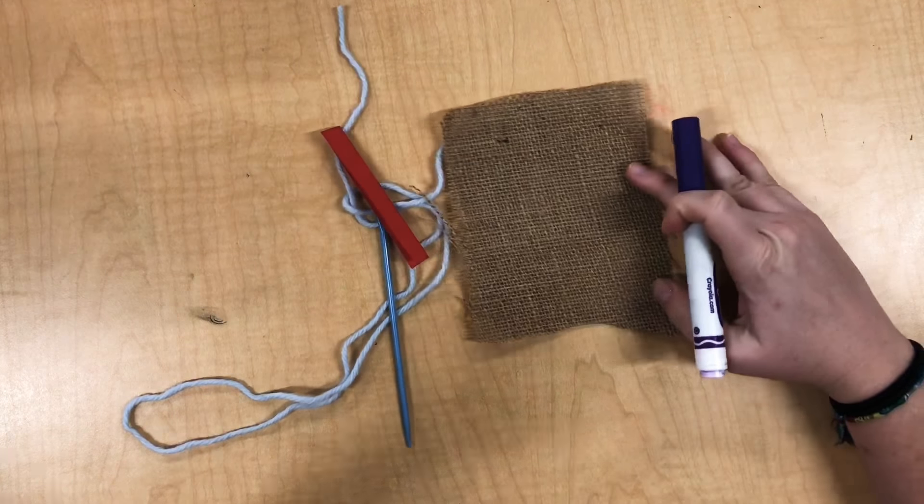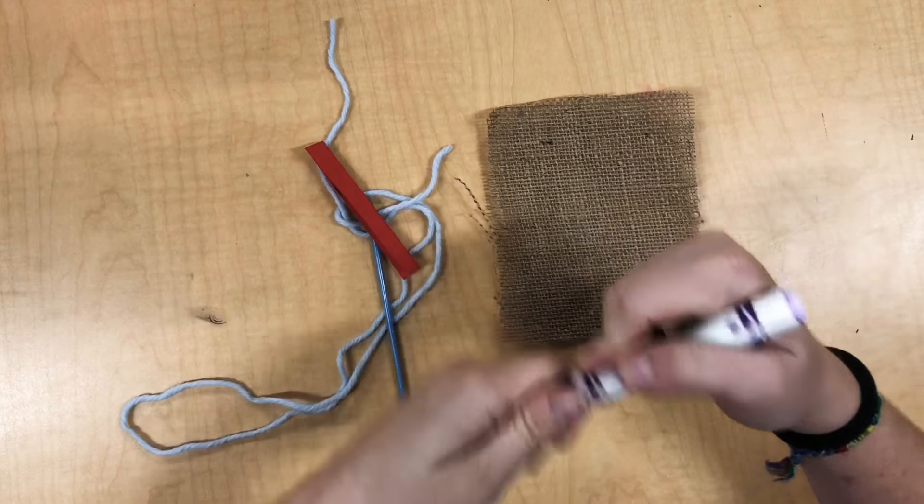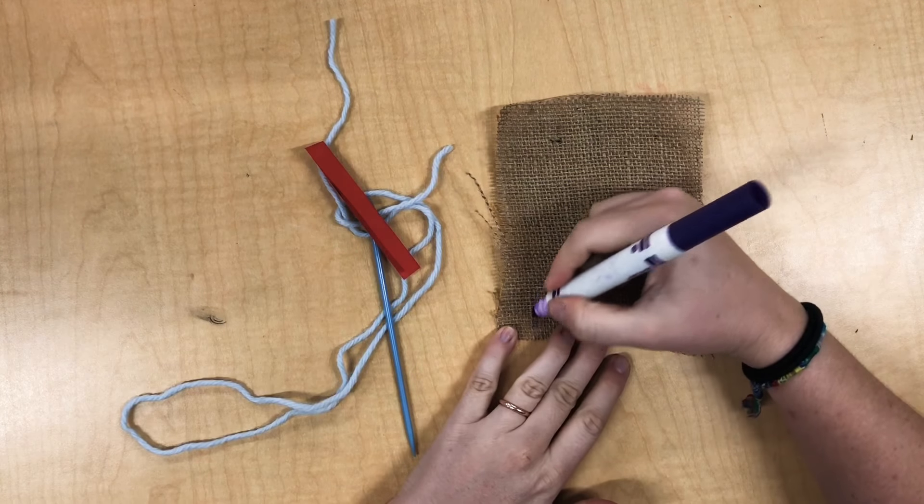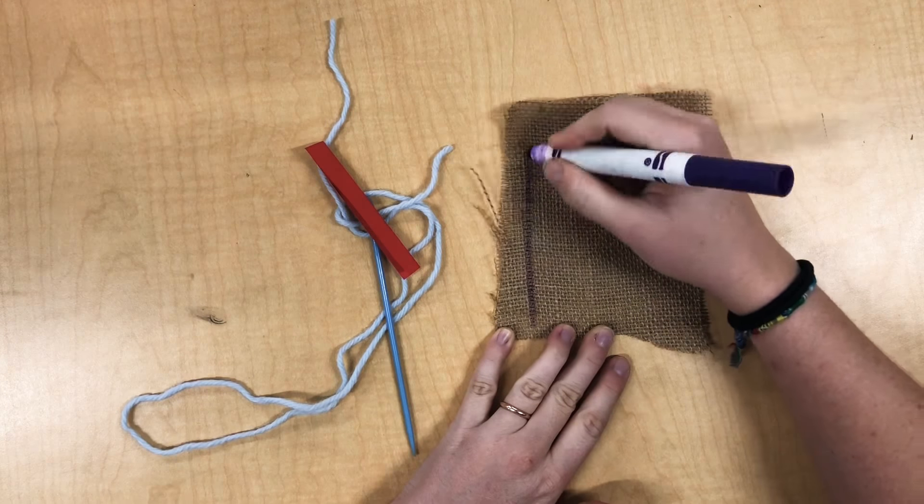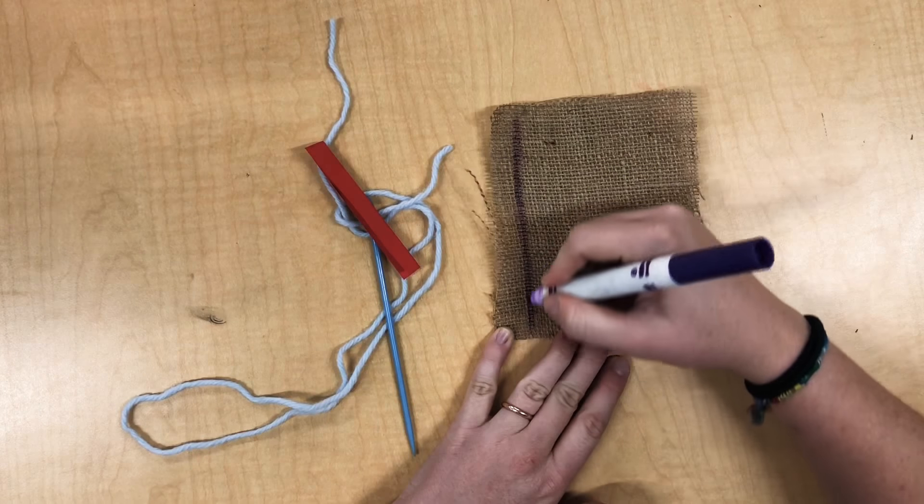Okay friends, once you are done with your sugar skull, we're gonna practice sewing. To practice sewing, first thing you're gonna do is take a marker and just draw a line on a piece of burlap. This is gonna be the line you're gonna practice sewing.